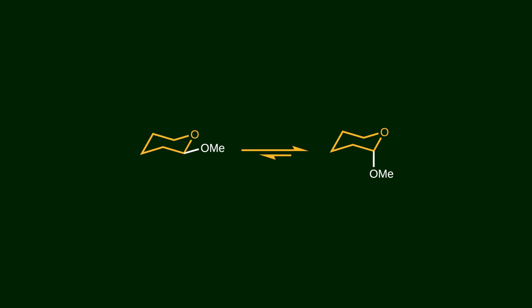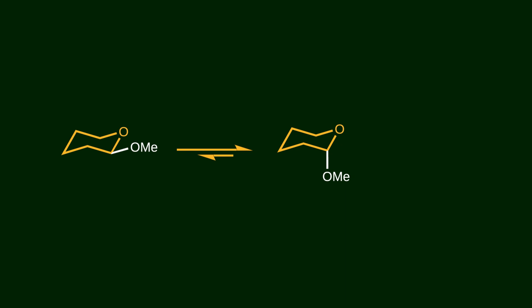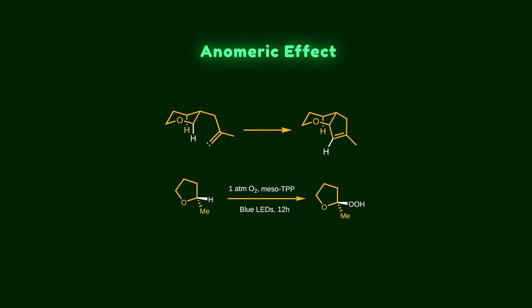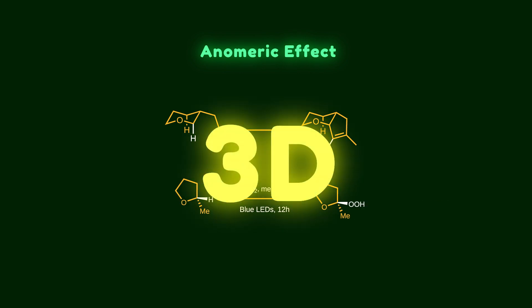A well-known example comes from carbohydrate chemistry, where a carbon-oxygen bond can be more stable in the axial position. In this video, I'm going to walk you through what the anomeric effect is and how it controls reactivity patterns in organic chemistry in 3D space, to give you a crystal-clear understanding of this concept.